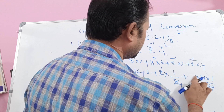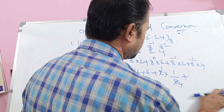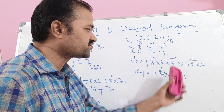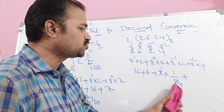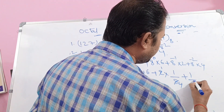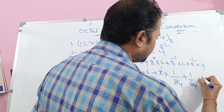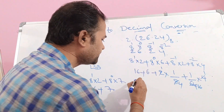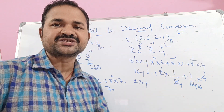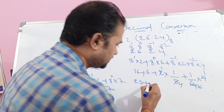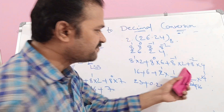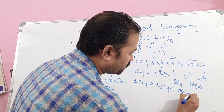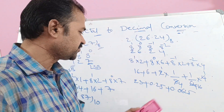So 8 power minus 1 into 2 means 2 into 1/8, which equals 2/8 = 1/4 = 0.25. Next, 8 power minus 2 means 1 divided by 64; so 4 into 1/64 gives 4/64 = 1/16 = 0.0625. So 16 plus 6 means 22 — wait — 16 plus 6 means 22, plus 0.25 and plus 0.0625.